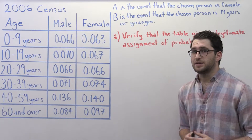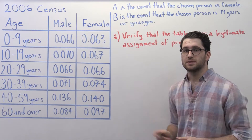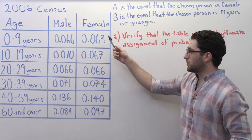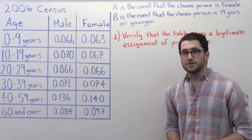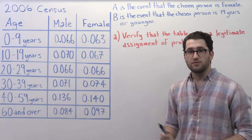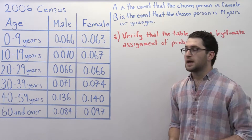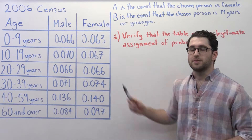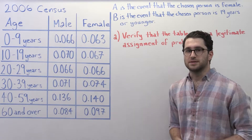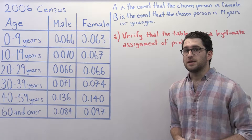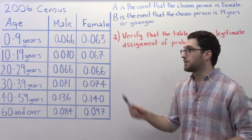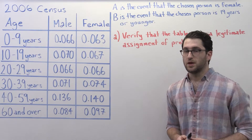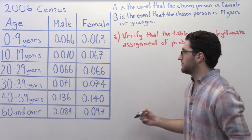Now what we need to check is that all of the probabilities are between 0 and 1. A quick cursory glance through the table shows that there are no negative probabilities and there are no probabilities greater than 1, so each probability is between 0 and 1. The last thing we need to do is sum up all of the probabilities and check that that equals 1.